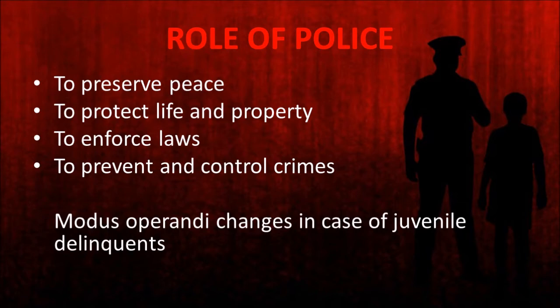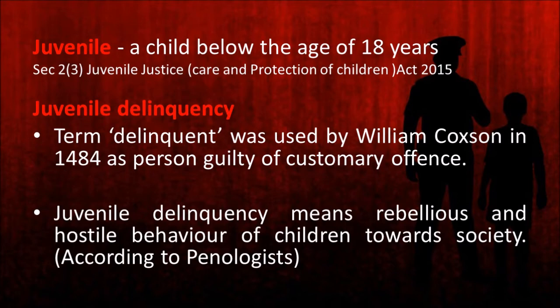The Juvenile Justice Care and Protection of Children Act 2015 defines a juvenile as a child below the age of 18 years. There is no definite definition of the term juvenile delinquency. The term delinquent was used for the first time by William Coxon in 1484 as a person guilty of a customary offence.